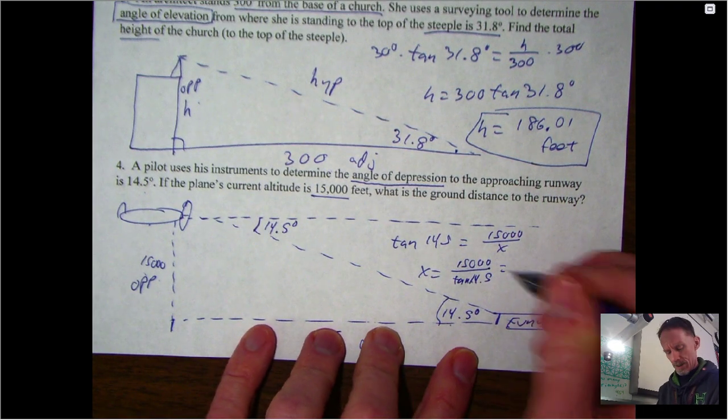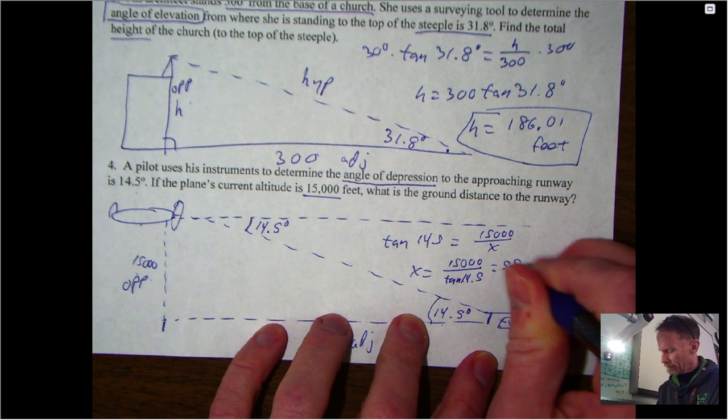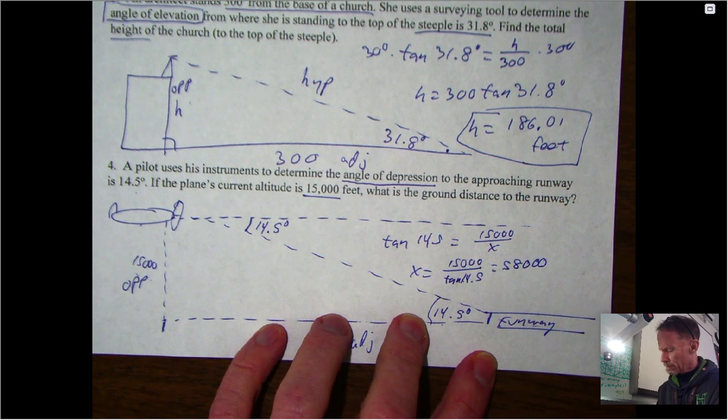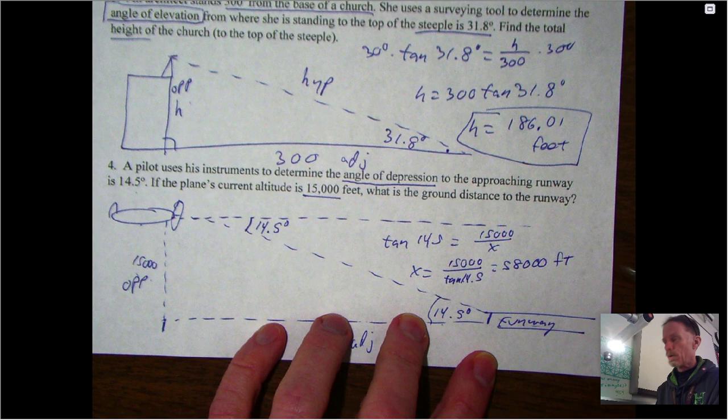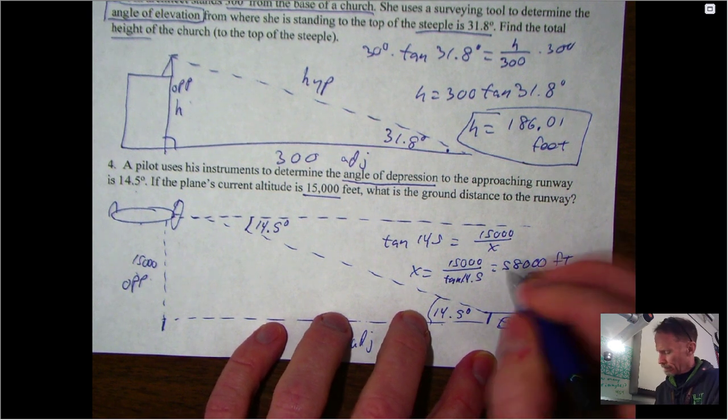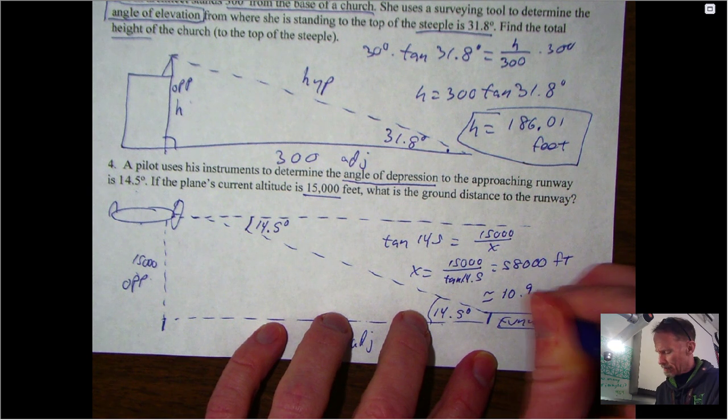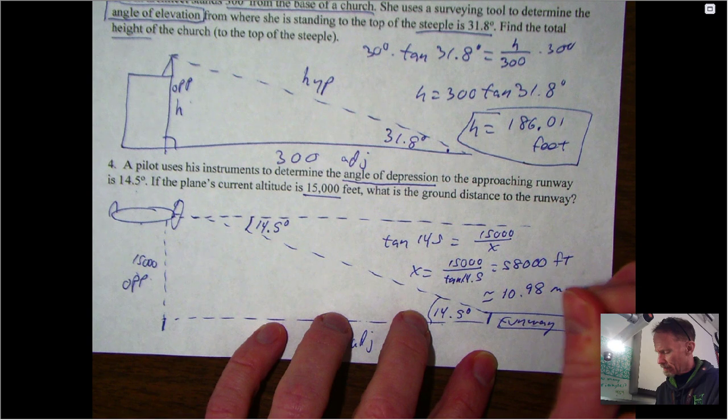And if you pop that into your calculator or Desmos you get right at 58,000 feet. And if you want to know what that is in miles, you can divide that by 5,280 and it's pretty close to 11 miles - it's about 10.98 miles in the distance.